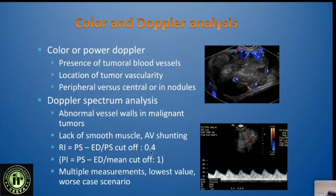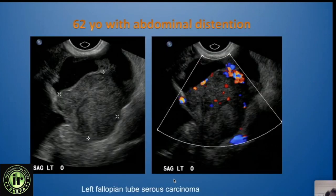Some people use resistance index measurements, but I don't personally think they are very helpful. If you just look at the lesion and the Doppler spectrum, that is usually sufficient to tell you whether it is likely to be malignant. Here is another example of a solid mass.